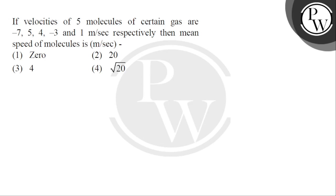Hello children, let's read the question. If velocities of 5 molecules of certain gas are minus 7, 5, 4, minus 3, and 1 meter per second respectively, then the mean speed of molecules is meter per second.